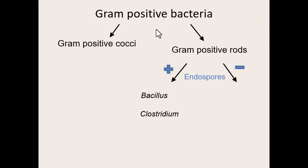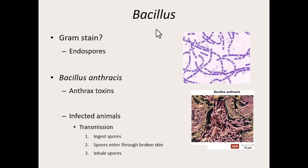Shifting over to a whole new shape — gram-positive rods, or gram-positive bacilli. Of all the gram-positive bacilli out there, we split them into two groups. There are two genera of gram-positive bacilli that can make endospores — we've already talked about those two genera: Bacillus and Clostridium. And then there's a whole group of gram-positive bacilli that don't make endospores. Starting first with the Bacillus genus: there are lots of bacillus bacteria out there, lots of species, and very few cause disease.